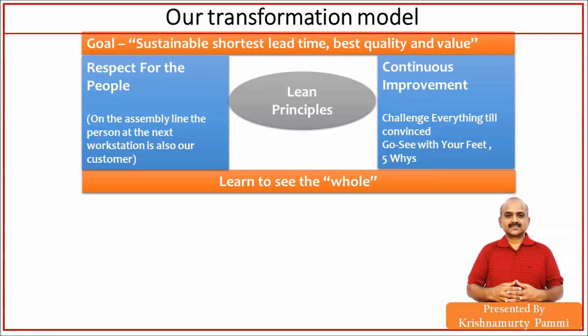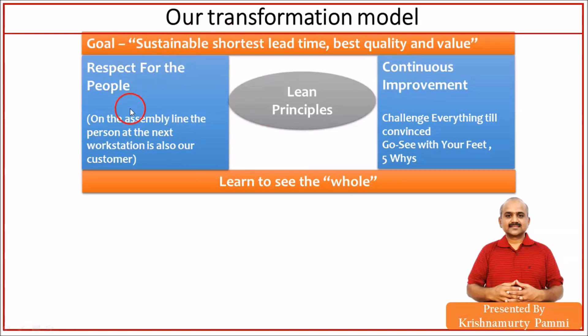Continuous improvement: challenge everything till you get convinced. People should have logic when they challenge. We need retrospectives. Go and see with your feet — Gemba Walk. And five whys: by the third why you will come to the root cause. Our goal is sustainable shortest lead time, best quality, and value. After six months: 262% improvement in productivity, setup time reduced from 65 to 15 hours daily — 50 hours of manpower time saved. Effective hardware utilization. We had bandwidth for new features. Employees were happy learning new things, and customers wanted to continue with us.